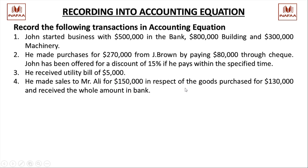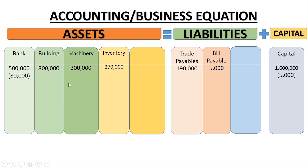Next transaction: sales to Mr. Ali for $150,000 cash, for goods purchased at $130,000. Bank increases by $150,000, inventory decreases by $130,000, and the $20,000 profit is recorded in capital. Profit increases capital — the equation remains balanced.